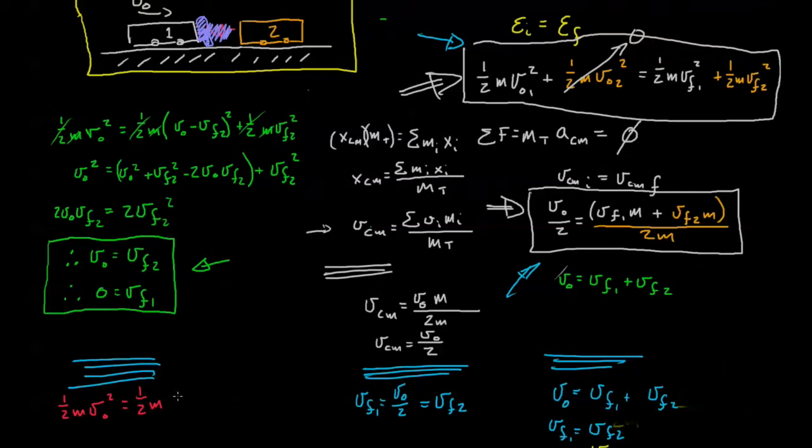Well, the final velocity is going to be v0 over 2 squared plus one half m again v0 over 2 squared. Remember, because vf2 is also v0 over 2. And I suppose technically if we want to be correct, we're wondering was energy conserved? Was the energy in motion conserved?